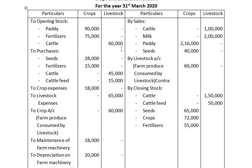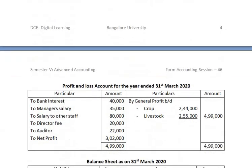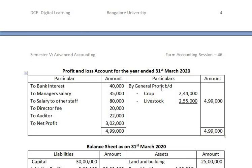Looking at the crop and livestock account: on the debit side we have opening stock, purchases, crop expenses, livestock expenses, maintenance of farm machinery, and depreciation on farm machinery. On the credit side we have sales, the livestock contra entry, and closing stock. The difference gives general profit, which is carried down into the profit and loss account. In the profit and loss account, all indirect expenses — bank interest, manager salary, salary to other staff, directors fees, and audit fees — are recorded on the debit side. The difference gives net profit.